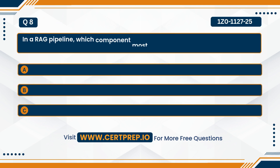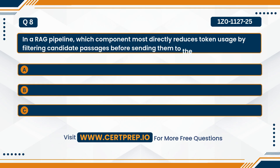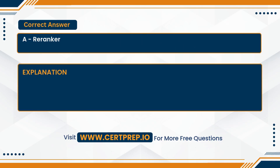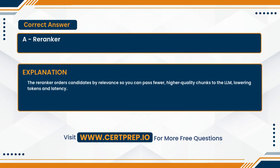Question eight. In a RAG pipeline, which component most directly reduces token usage by filtering candidate passages before sending them to the LLM? A. Reranker. B. Embedder. Or C. Retriever. The correct answer is A — Reranker. The reranker orders candidates by relevance so you can pass fewer, higher-quality chunks to the LLM, lowering tokens and latency.